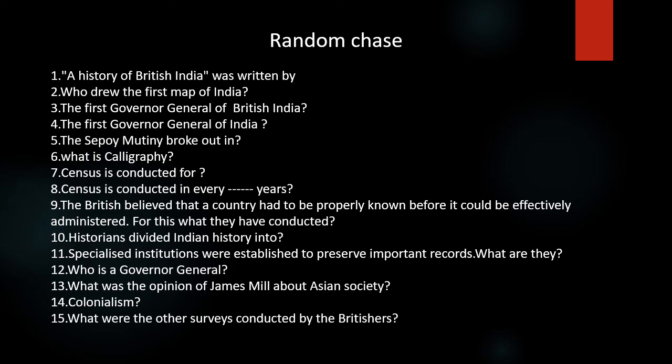Nine: The British believed that a country had to be properly known before it could be effectively administered — for this, what did they conduct? Ten: Historians divided Indian history into? Eleven: Specialized institutions were established to preserve important records — what are they? Twelve: Who is a governor general? Thirteen: What was the opinion of James Mill about Indian society? Fourteen: What is colonialism? Fifteen: What were the other surveys conducted by the British?